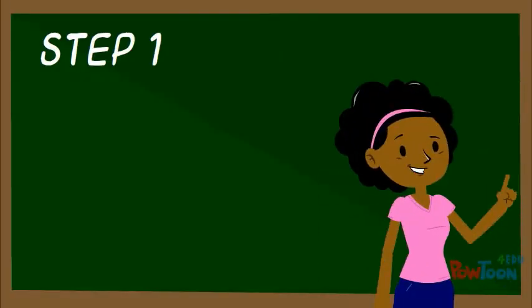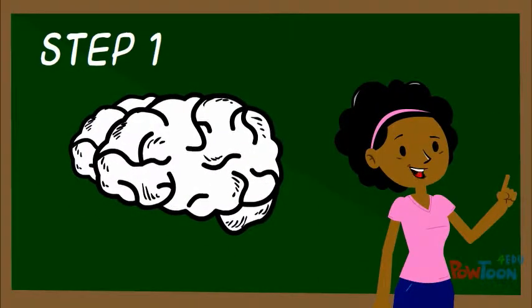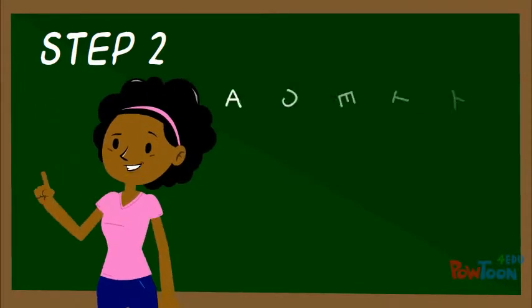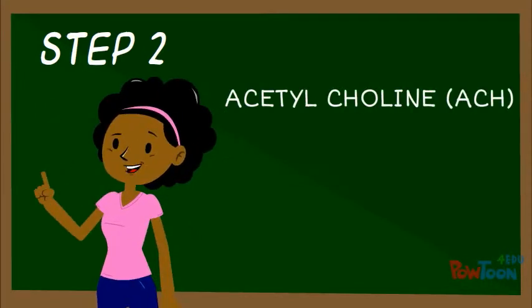The first step is for the brain to send a signal for the muscle to contract. The signal is sent by acetylcholine, a neurotransmitter that is released into the sarcoplasmic reticulum.